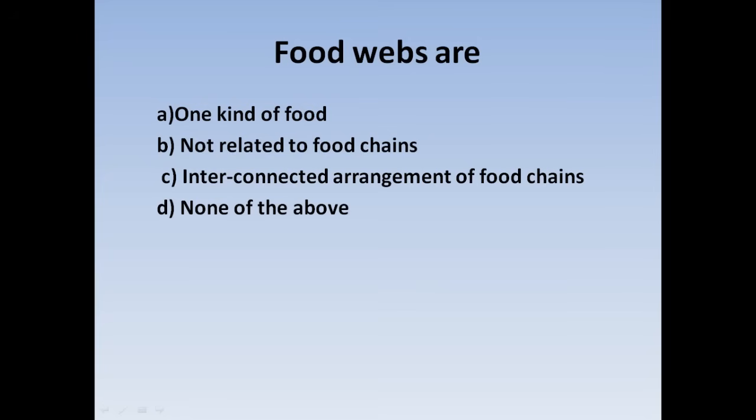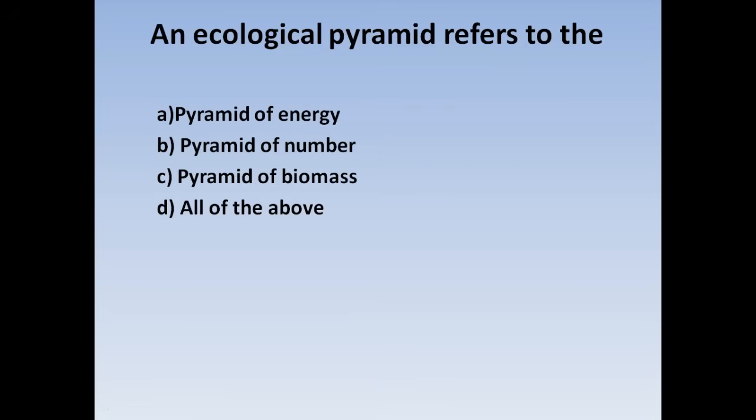Next question: A food web is — Option B: Not related to food chain, Option C: Interconnected arrangement of food chains, Option D: None of the above. Correct answer: Option C — a food web is an interconnected arrangement of food chains.